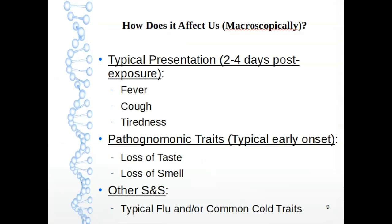The typical presentation of COVID once we get it is two to four days post exposure. We typically will present with those three symptoms known as fever, cough, and tiredness. Pathognomonic traits, and the word pathognomonic simply means you don't always get these traits but if you get those traits you can almost always bet that it is COVID. It is SARS-CoV-2 infection and you're in the COVID-19 progression. That is loss of taste and loss of smell. Once again you don't always present with that but if you present with it it is almost always COVID-19 progression. Other signs and symptoms that may occur will be typical flu or common cold traits.